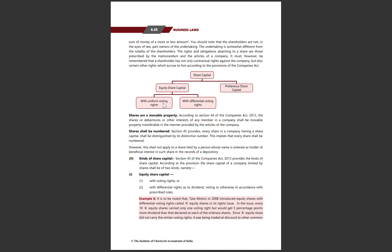With uniform voting rights, if you have 1 share you give 1 vote. But with DVR, if you have 1 share you can give 4 votes. Shares are a movable property. According to Section 44 of the Companies Act 2013, shares, debentures, or other interests of any member in a company shall be movable property, transferable in the manner provided by the articles of the company.